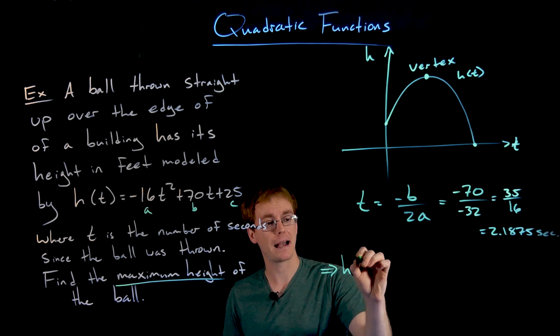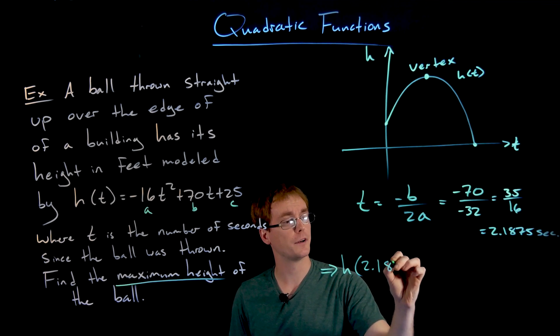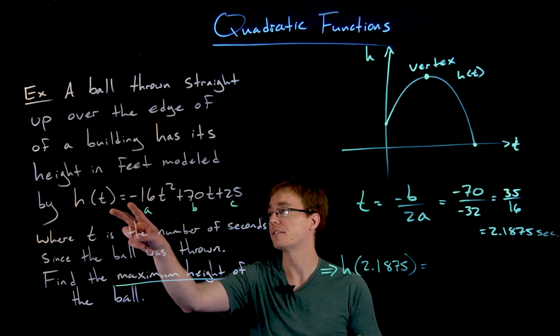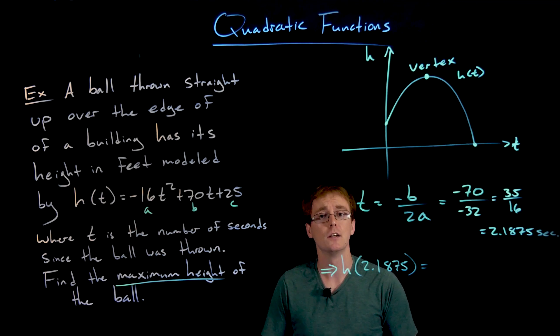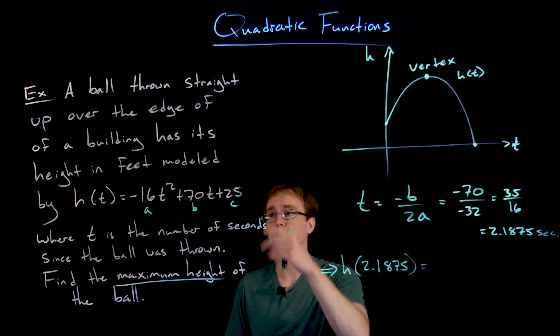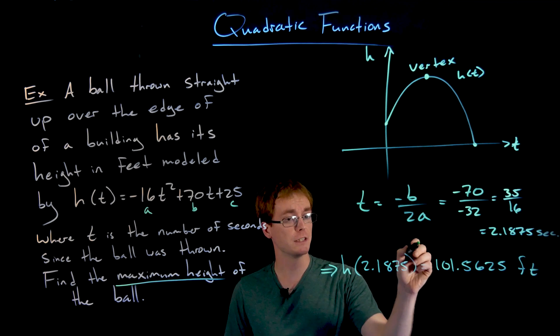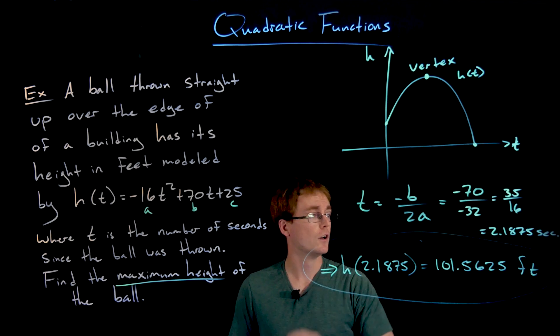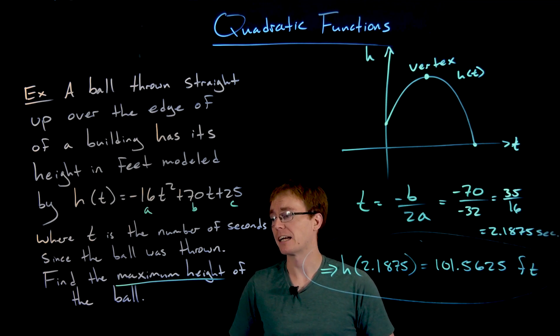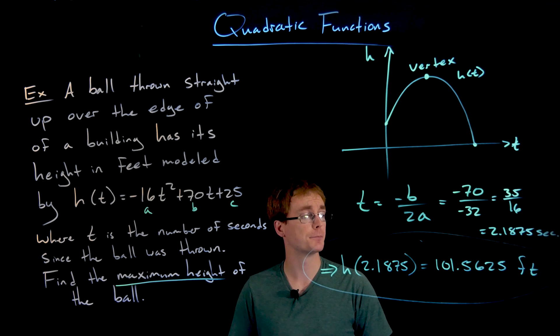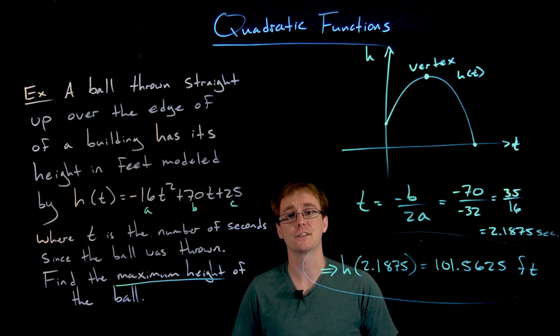To find our maximum height we just plug our t value of 2.1875 into our height function h(t) = -16t² + 70t + 25. That's something we would have a calculator assist us in evaluating. When we do that our calculator should give us a value of approximately 101.5625 feet. The maximum height this ball reaches when thrown from the top of this building is about 101.6 feet off the ground.